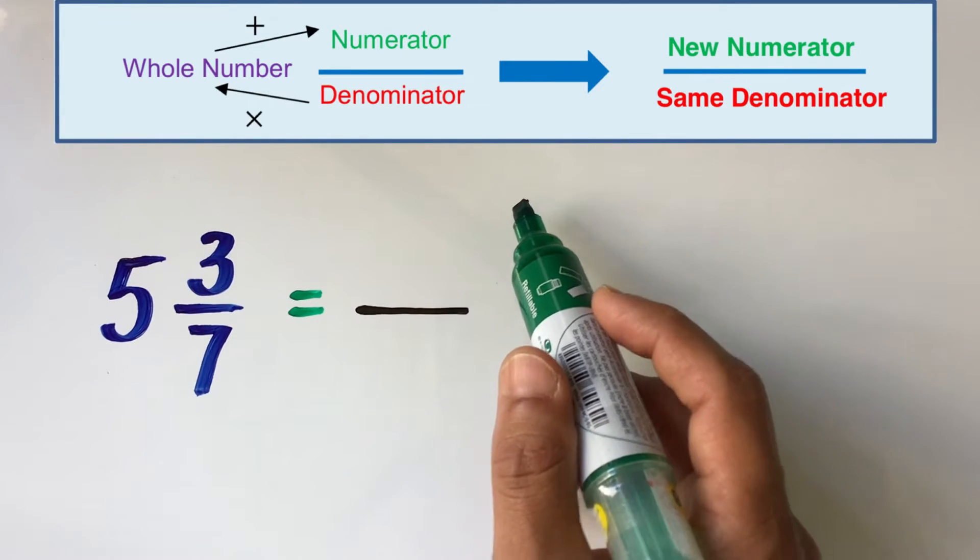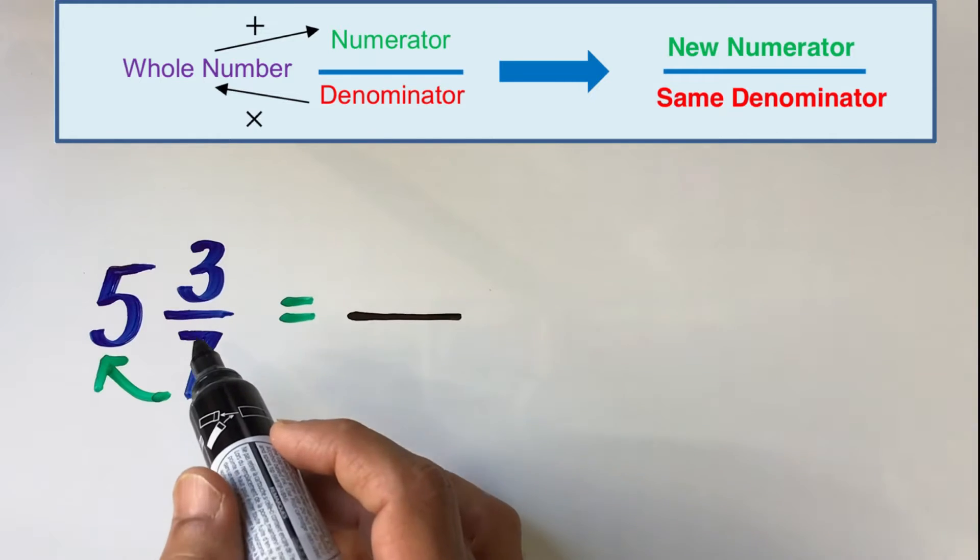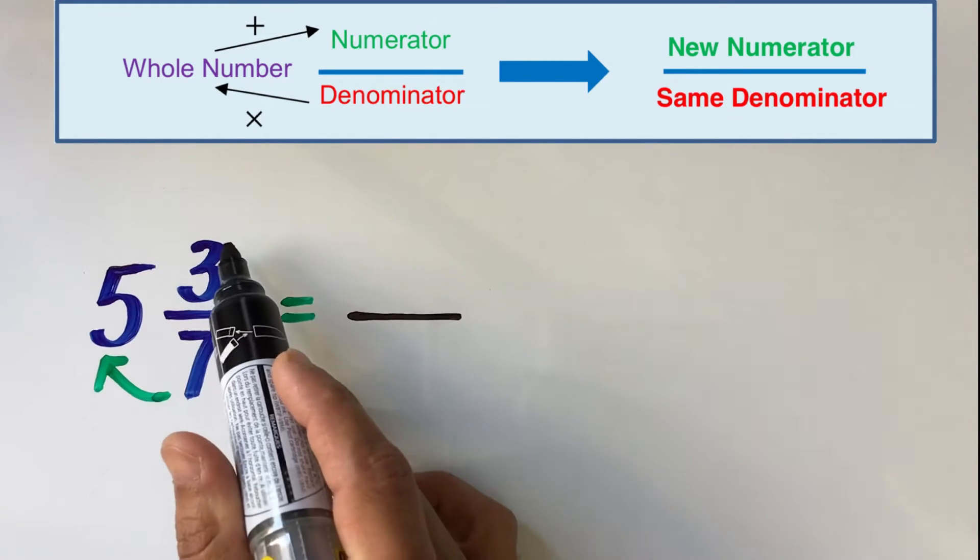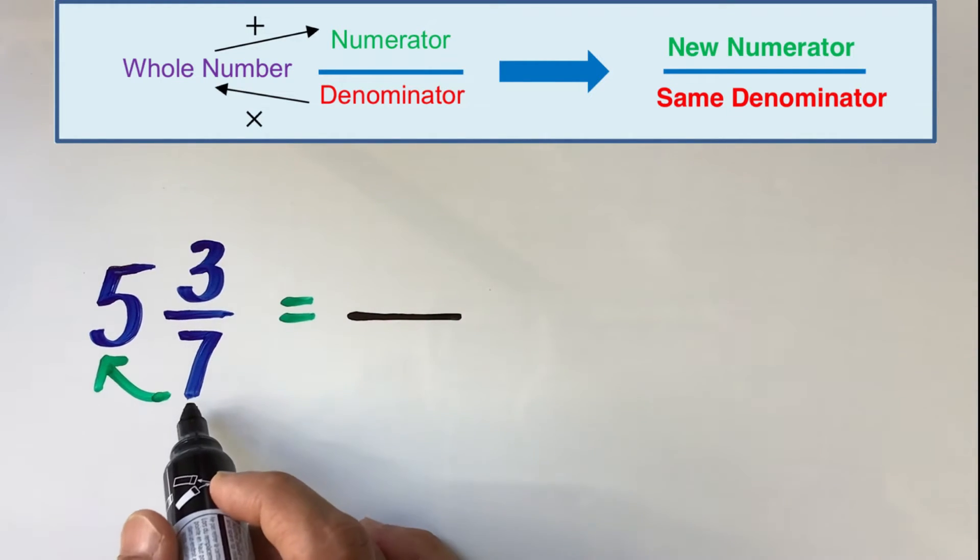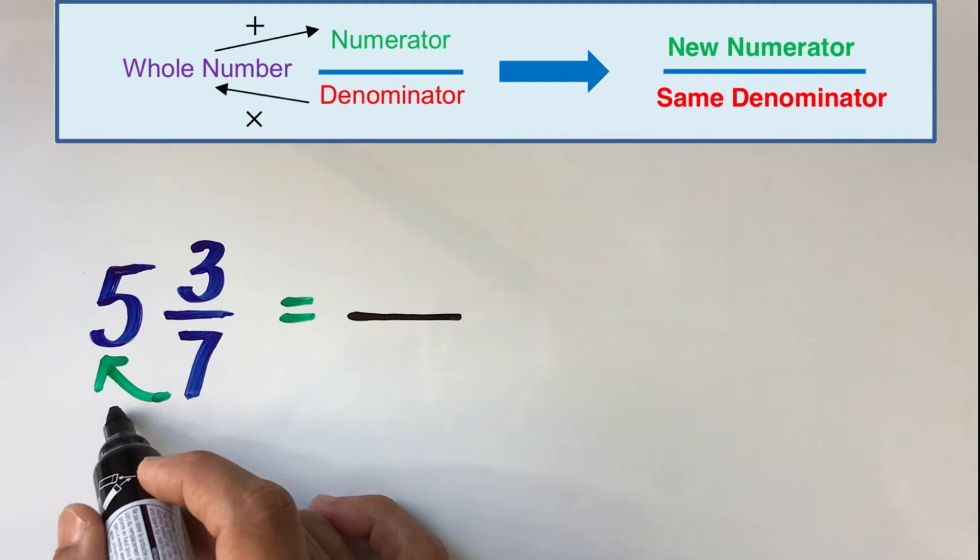Now keeping these two steps in mind, let us try a few examples. In this mixed fraction, which is 5 whole 3 over 7, we first multiply the denominator or the bottom number with the whole number.